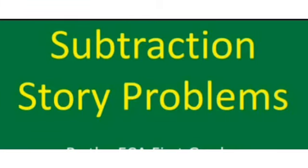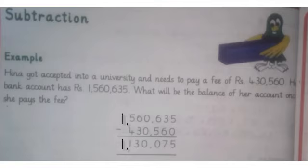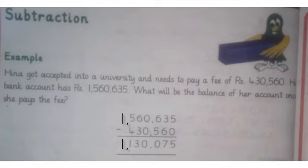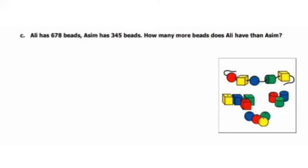Now we will learn subtraction story problems. Example: Hina got accepted into a university and needs to pay a fee of rupees 430,560. Her bank account has rupees 1,560,635. What will be the balance of her account once she pays the fee? Write the bigger value on top: 1,560,635. Then write the smaller value: 430,560. Subtract these values and you will get 1,130,075.